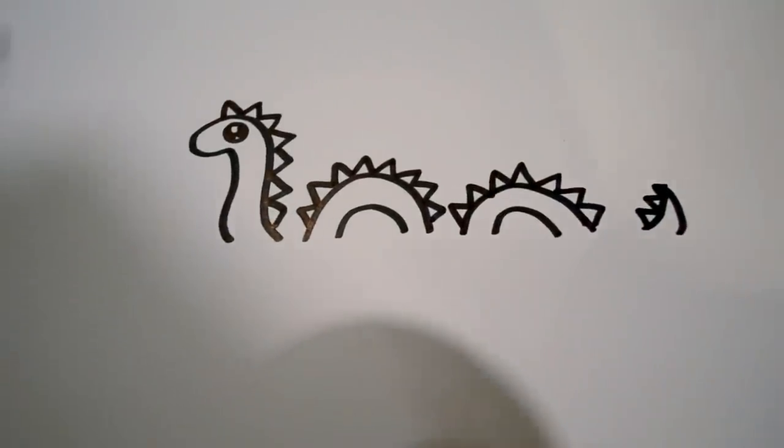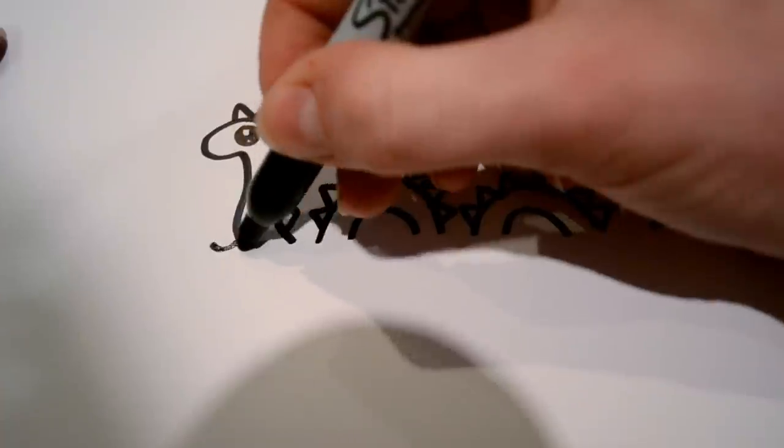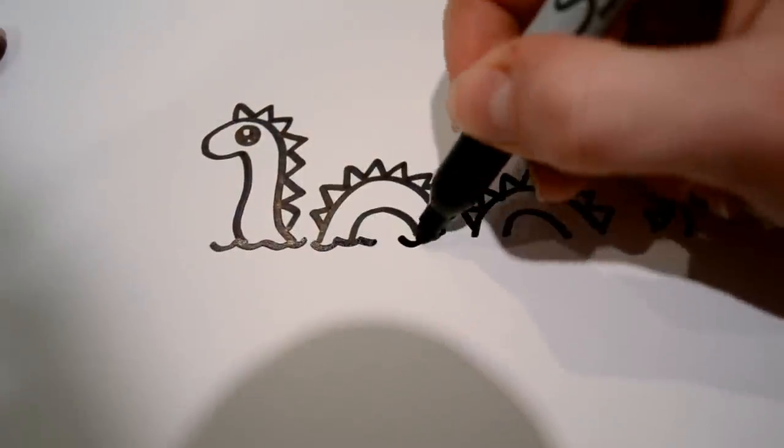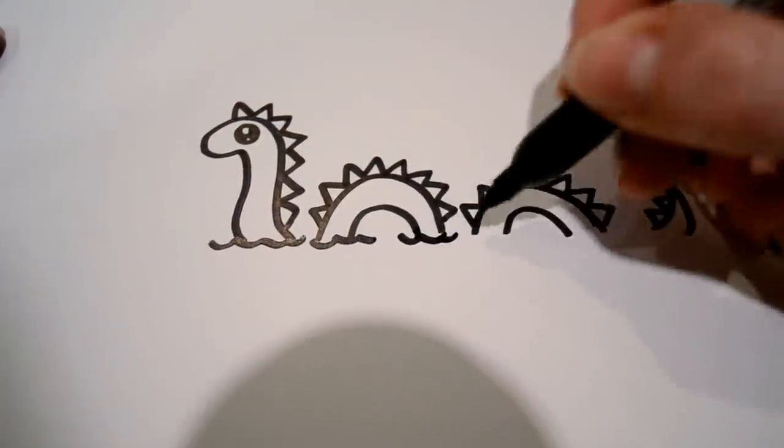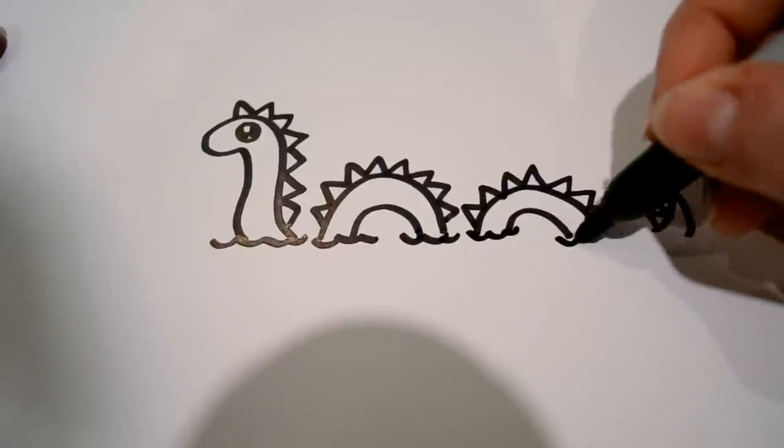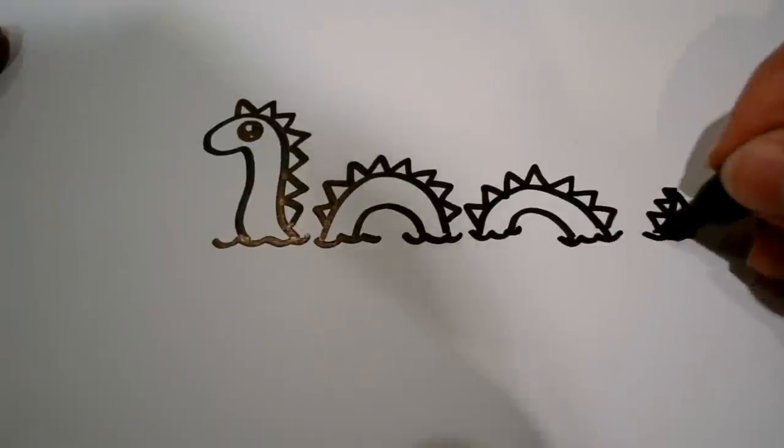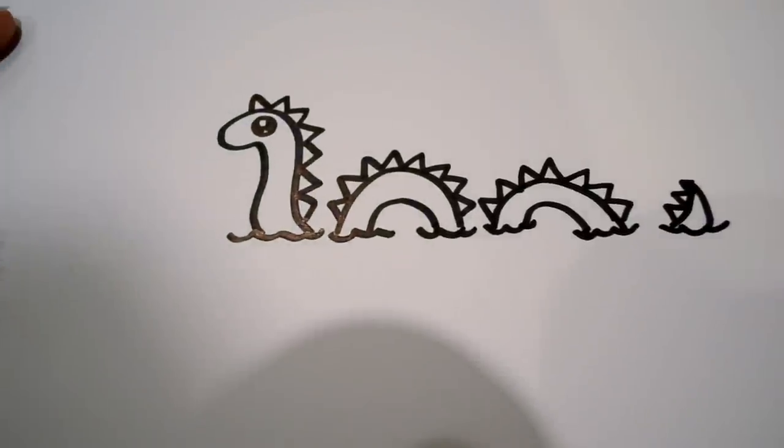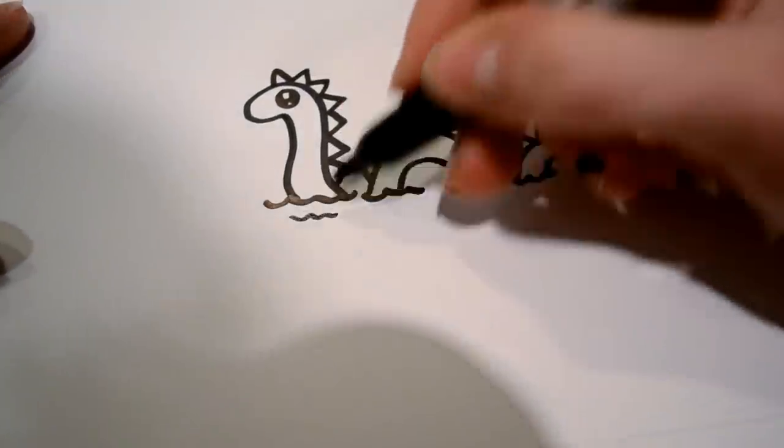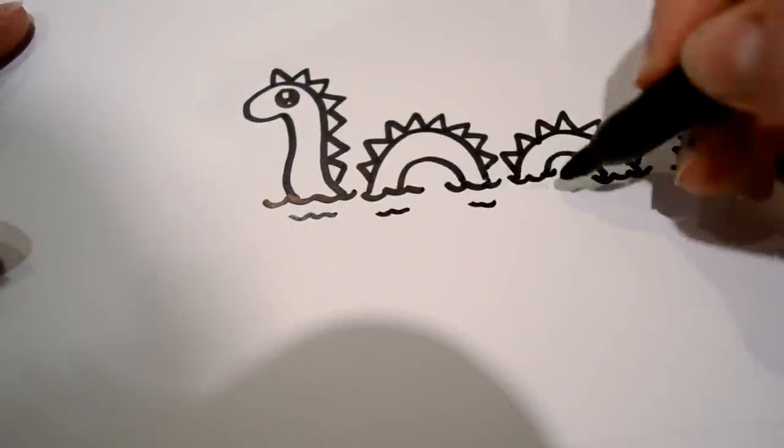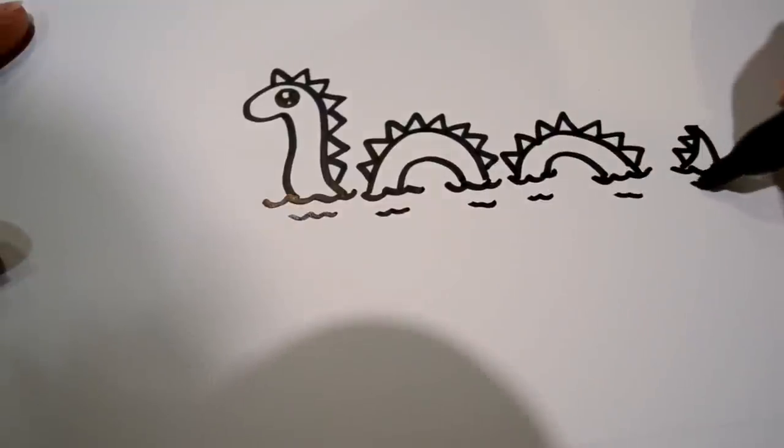And then the last step we're going to want to draw is the water, which is just swirled lines, anywhere that the body of the Loch Ness Monster would touch the water, just like that. So it's not everywhere, unless you want it to be. And then you can draw just a little bit more detail under that.